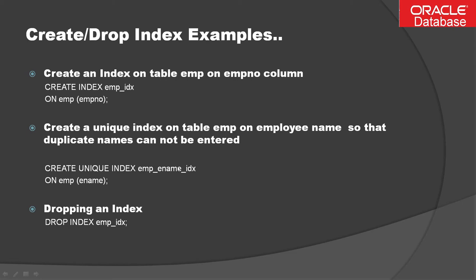To create a unique index on the emp table on employee name so that duplicate names cannot be entered, you write CREATE UNIQUE INDEX, then the index name, ON the table name, and specify the column. Once you create this unique index on ename, duplicate names cannot be entered. To drop any index, use DROP INDEX followed by the index name.